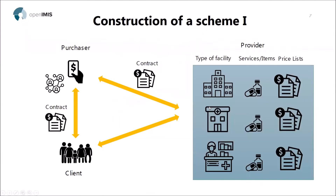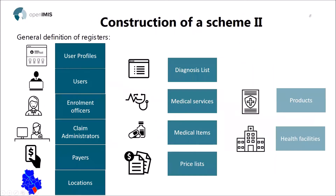Coming back to the construction of a scheme, I mentioned the different flows happening on three sides: the purchaser, the healthcare provider, and the client side. What I'll focus on today is the provider side — the different types of facilities, how to configure those, what kind of services and items they offer, what kind of price lists, and how these arrangements are encapsulated within a so-called insurance product which the insurer then provides, along with the different conditions given to the client. What we did before was around access — different logins, users, and geographical locations. Now, how that translates into so-called registers: before you start any scheme, all of this has to be configured in the system.